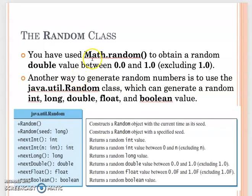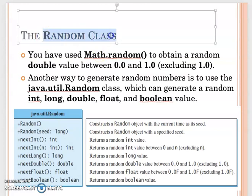The Random class is very similar to Math.random(). But the Random class is a separate class. Math.random() is just a static method from the Math class. Another way to generate random numbers is to use the Random class from java.util. It can generate random numbers in different data types.